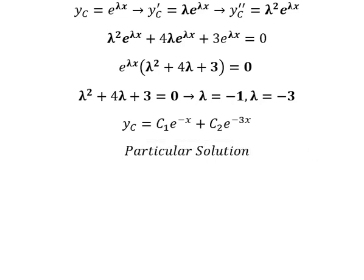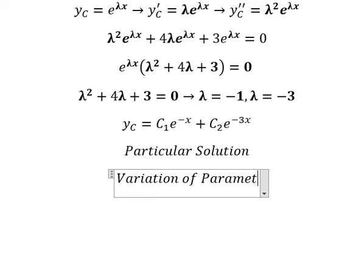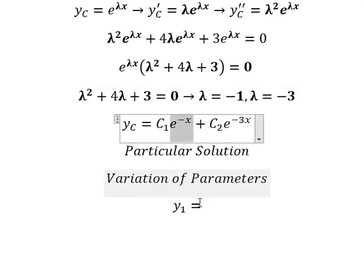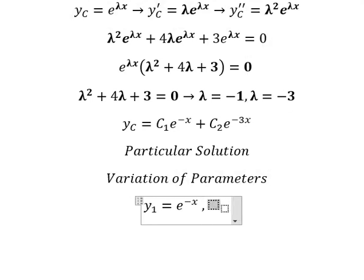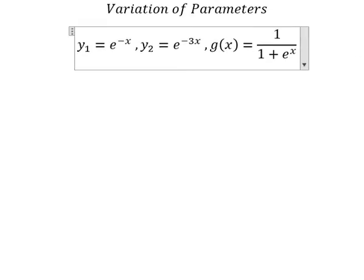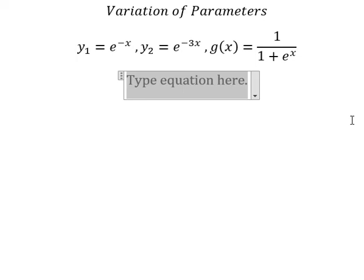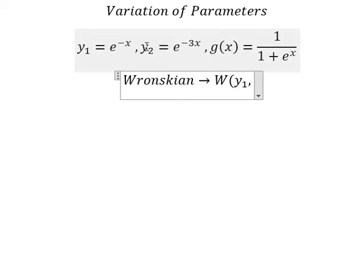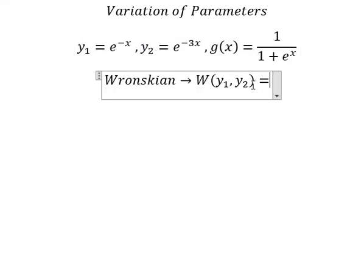For the particular solution we need to use variation of parameters. I will identify y₁, y₂, and g(s). Next we need to find the Wronskian W of y₁ and y₂, which is computed as a determinant of the matrix formed by y₁, y₂ and their first derivatives.